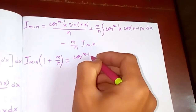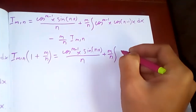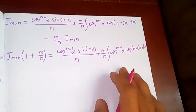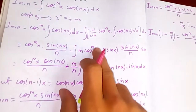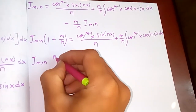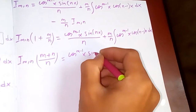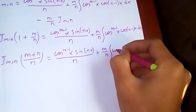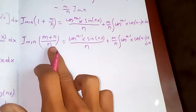Which equals cos^(m-1)(x)·sin(nx)/n plus m/n times integration of cos^(m-1)(x)·cos(n-1)x dx. I don't integrate that last integral again because the same process would follow. So I_{m,n} · (m+n)/n equals cos^(m-1)(x)·sin(nx)/n plus m/n times integration of cos^(m-1)(x)·cos(n-1)x dx. The n's cancel out.